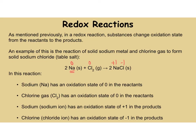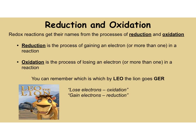Both species — sodium and chlorine — changed their oxidation state as they went from reactants to products. This means this is a redox reaction. In a redox reaction, we have a process of reduction and a process called oxidation — put those words together and you get redox. Reduction is the process of gaining an electron, so you go from positive to negative, or less positive. Oxidation is the process of losing an electron, so you go from negative to positive. The way you remember which is which: Leo the lion goes ger — lose electrons, oxidation; gain electrons, reduction.